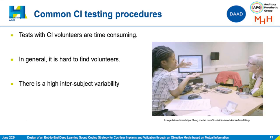To test these speech denoising algorithms, such as DeepACE or other front-end filtering denoising algorithms, typically we invite CI subjects to the clinic. These tests are time-consuming, and in general it's difficult to find volunteers to do these experiments. That's why it's convenient to develop an objective measure to assess the performance without the actual subjects. This is what my colleague Franklin is going to talk about.